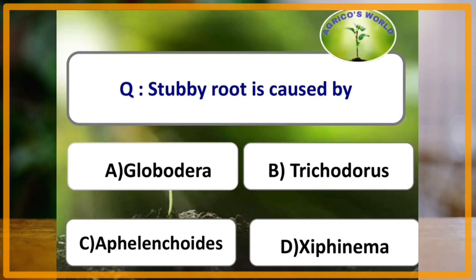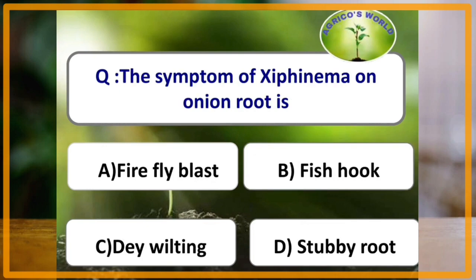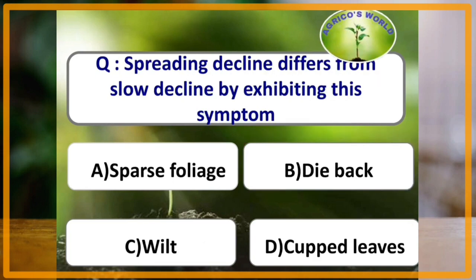Stubby root is caused by Trichodorus. The symptom of Xiphinema on onion root is fish hook. Spreading decline differs from slow decline by exhibiting the wilt symptom.